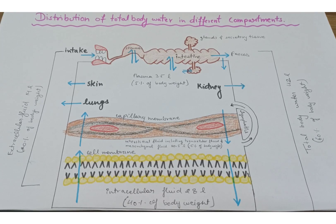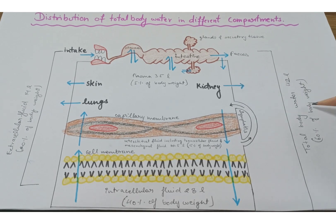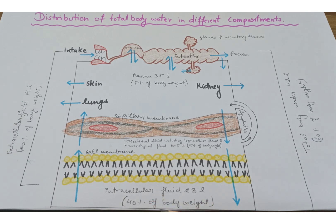Hello dear students, welcome to my channel Incredible Fitness Quotient. Today we are going to discuss the distribution of total body water in different compartments. As shown in this diagram, total body water is 42 liters, which is 60 percent of the body weight. It is further divided into extracellular fluid — 14 liters, which is 20 percent of body weight — and intracellular fluid — 28 liters, which is 40 percent.